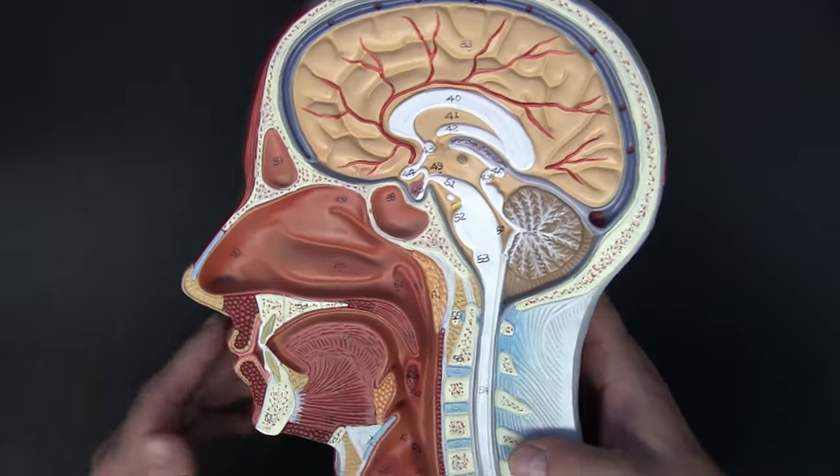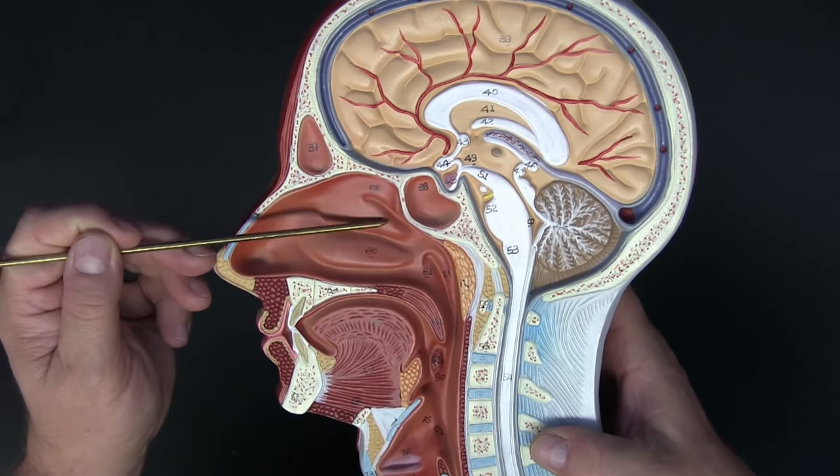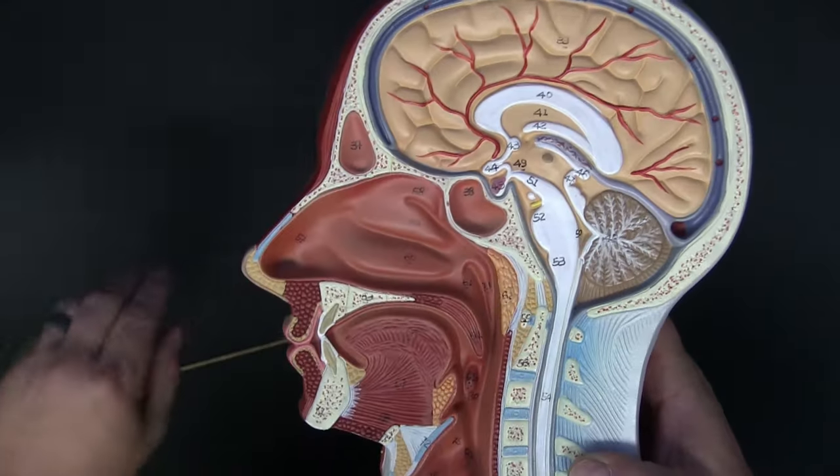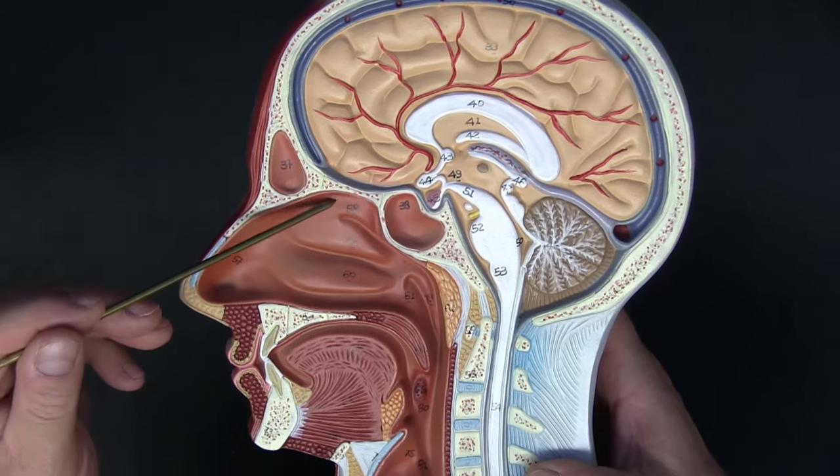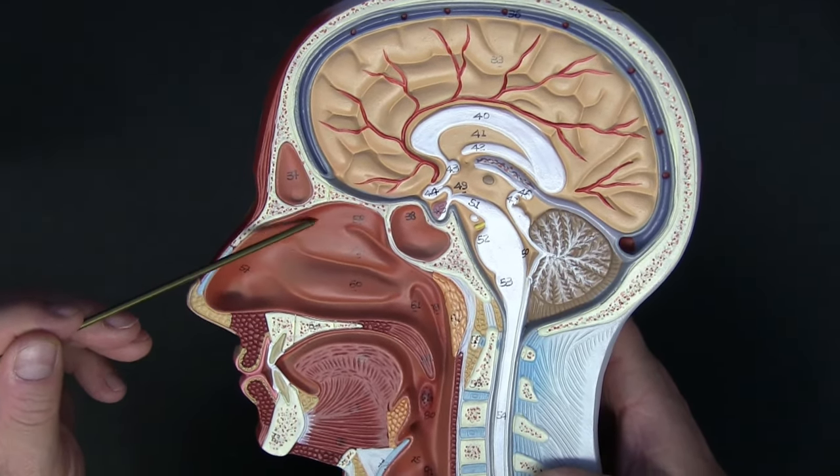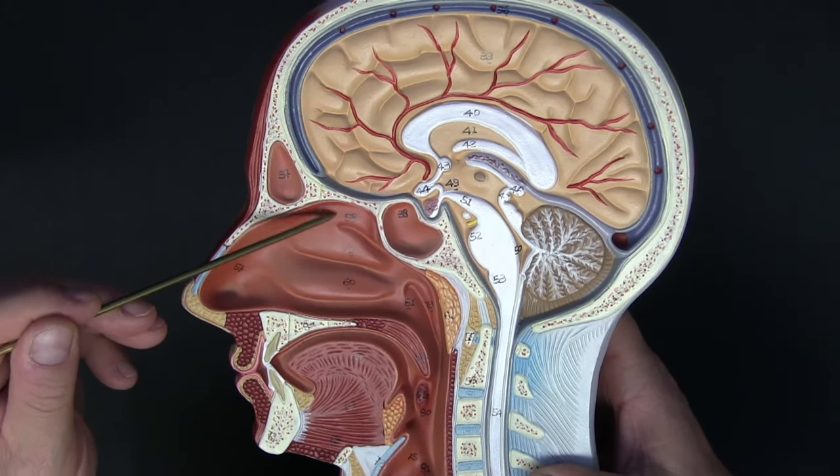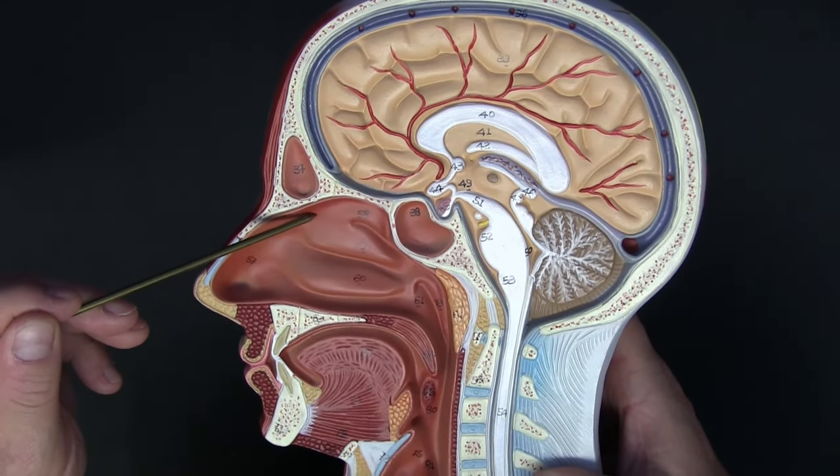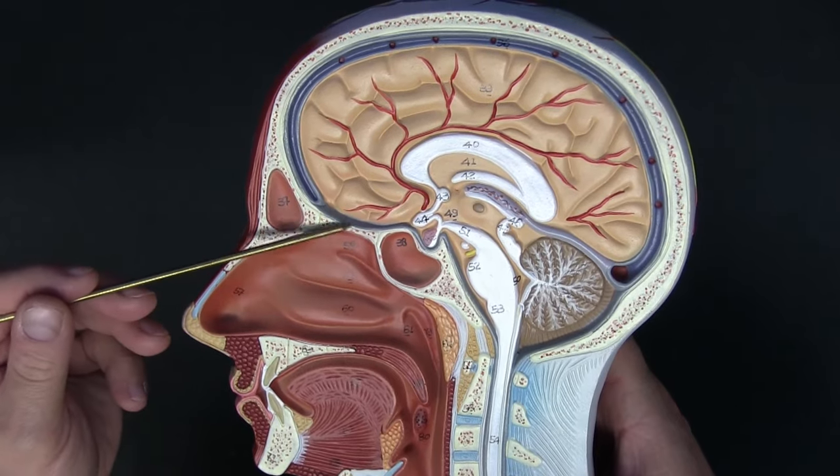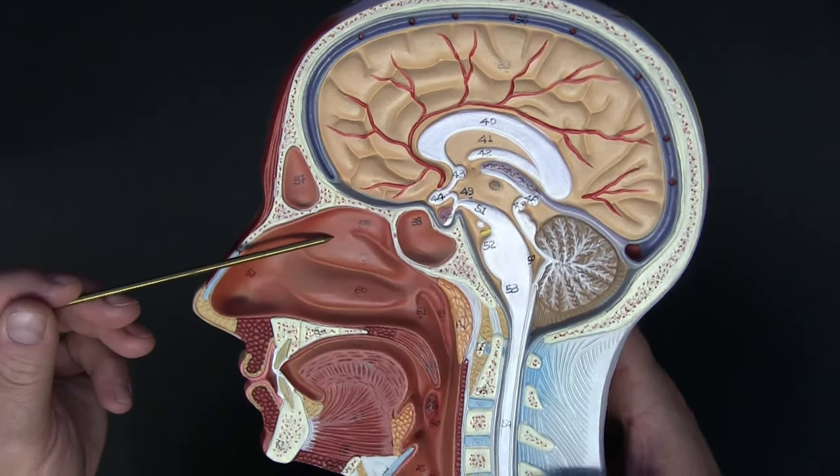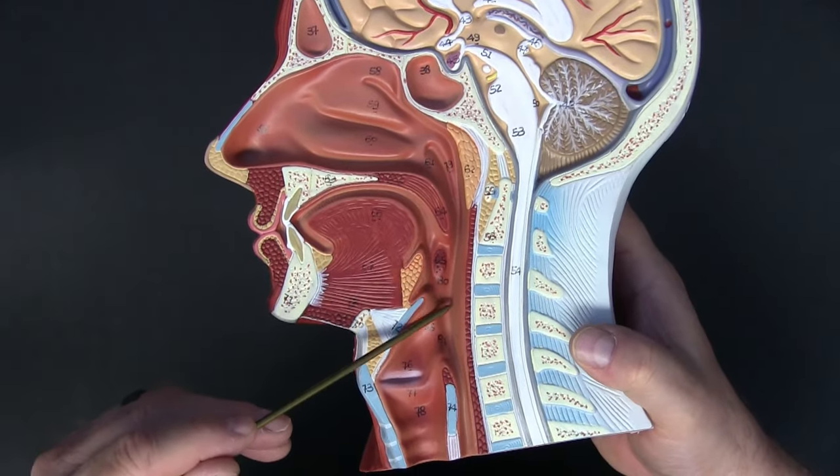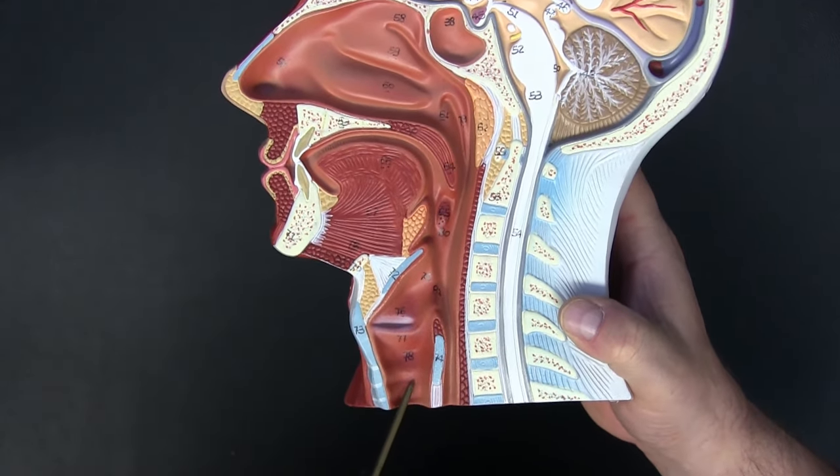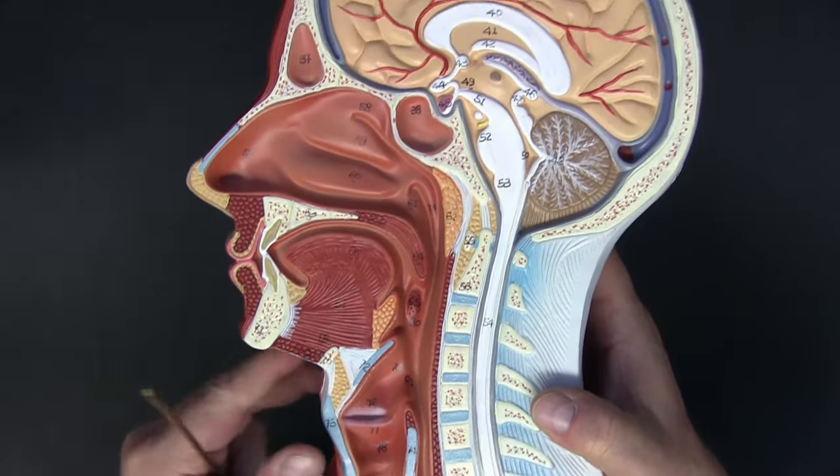One thing I want to note before we go any further is that here in the top part of the nasal cavity, both on the septum, which would be that plate covering the midline, as well as the lateral wall, we have what's called an olfactory epithelium. This is where the first cranial nerve, cranial nerve 1, is going to send its nerves that are able to sense smell. So our entire sense of smell is localized in this area. As substances come in with the air, our olfactory nerve is able to sense and smell what's going on in our environment before that air passes down through the nasopharynx, oropharynx, laryngopharynx, and then finally into the larynx itself, which is going to take it to the lungs.